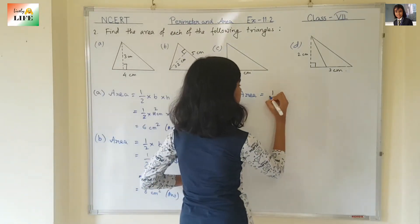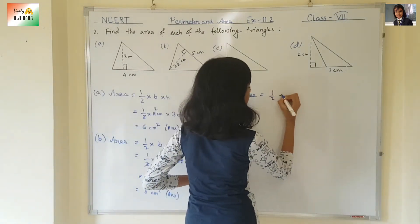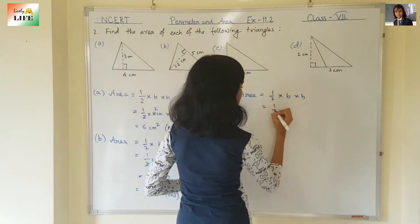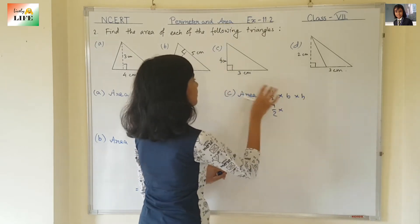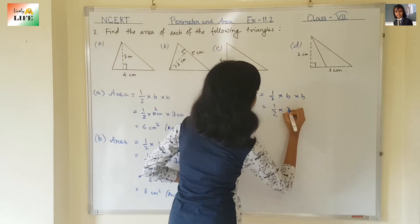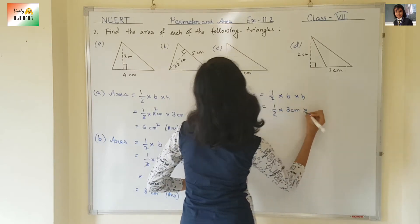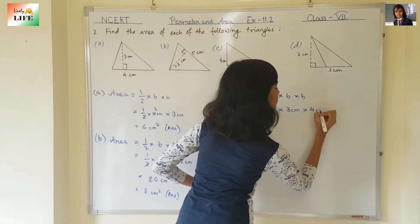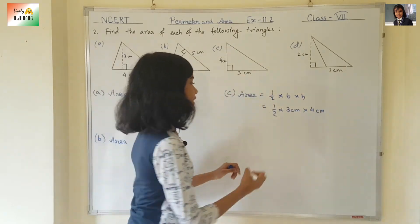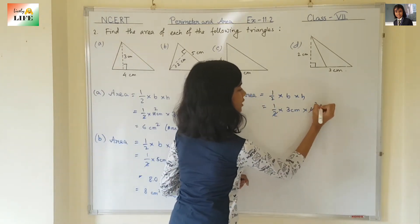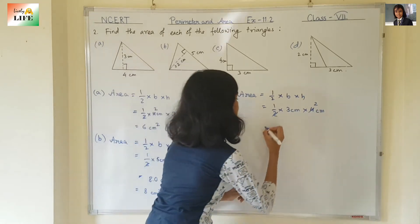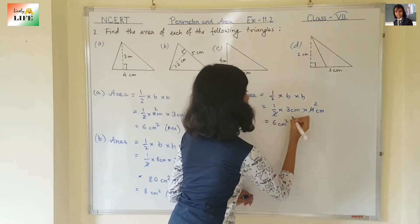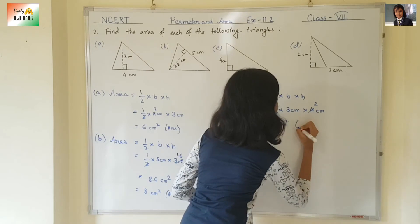Same — half into base into height. Half into base, which is three centimetres, and height is four centimetres. Two twos are four, three twos are six — six centimetre square. This is the answer.